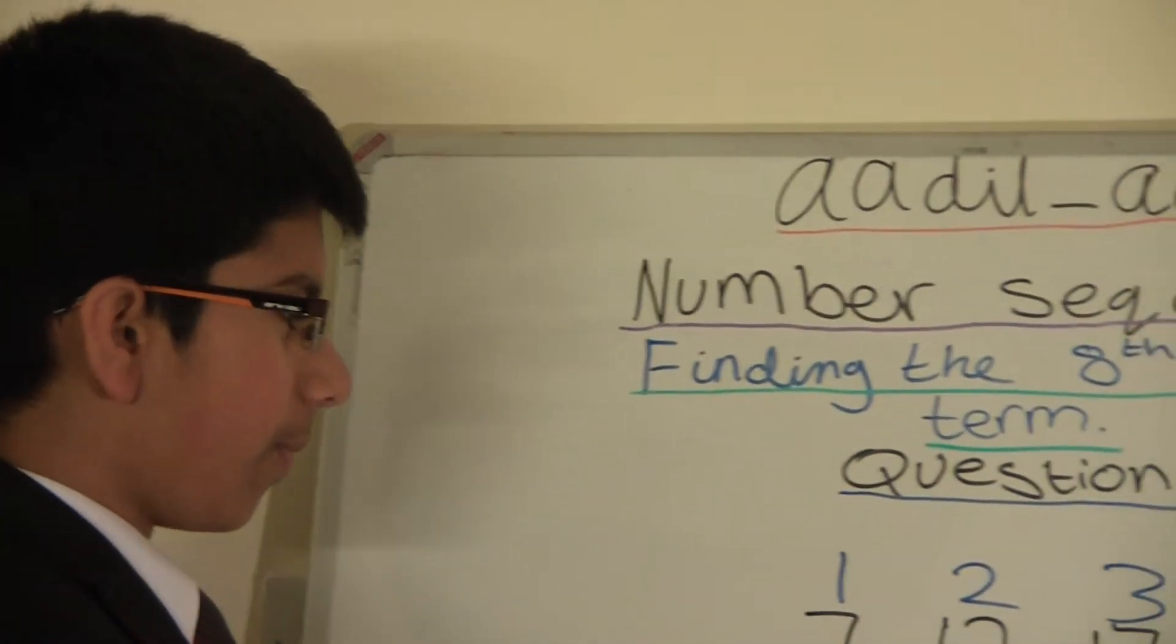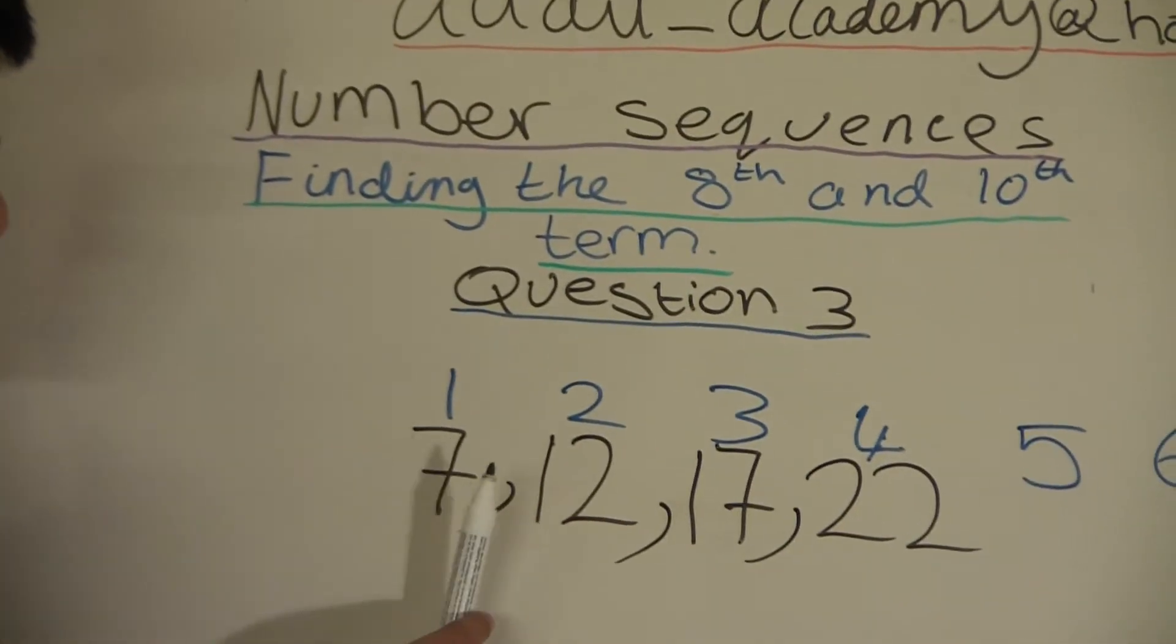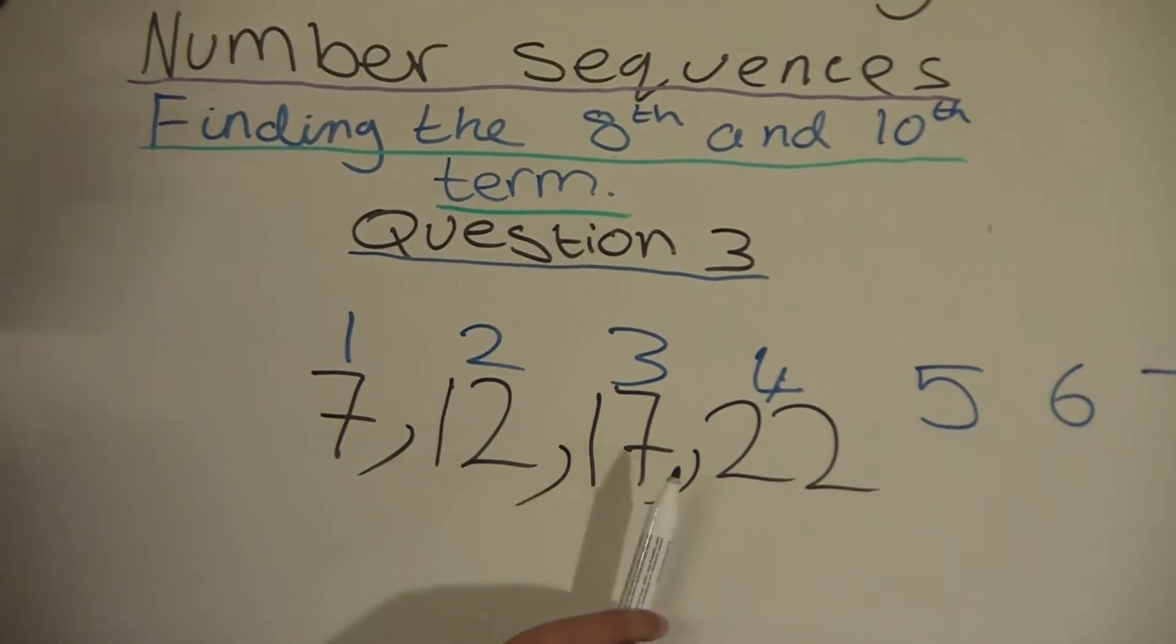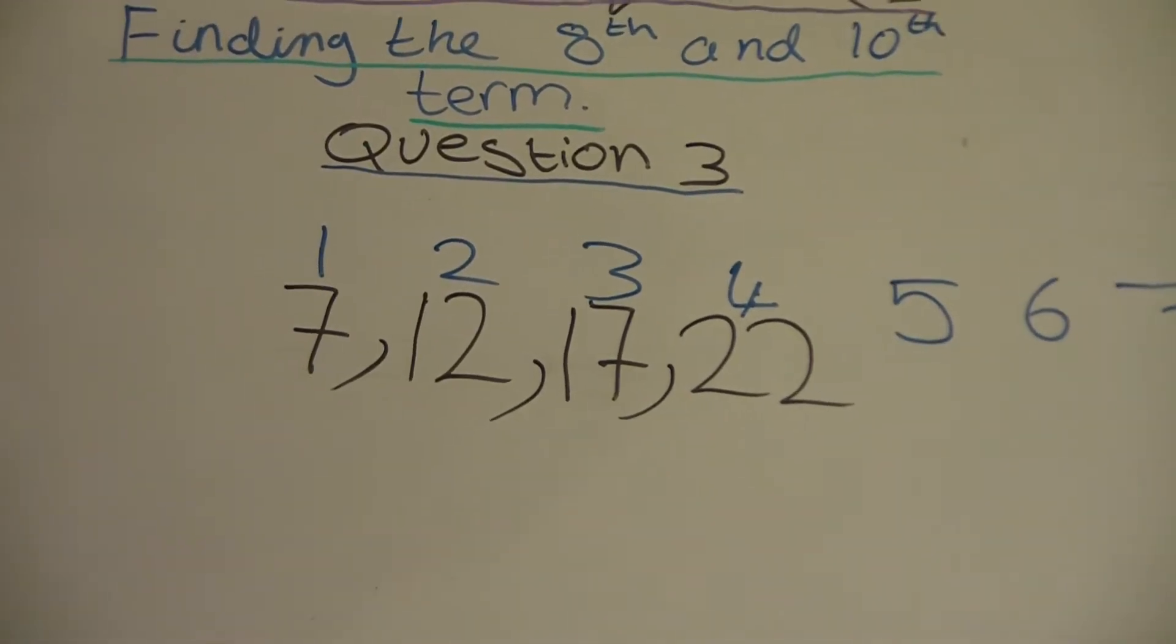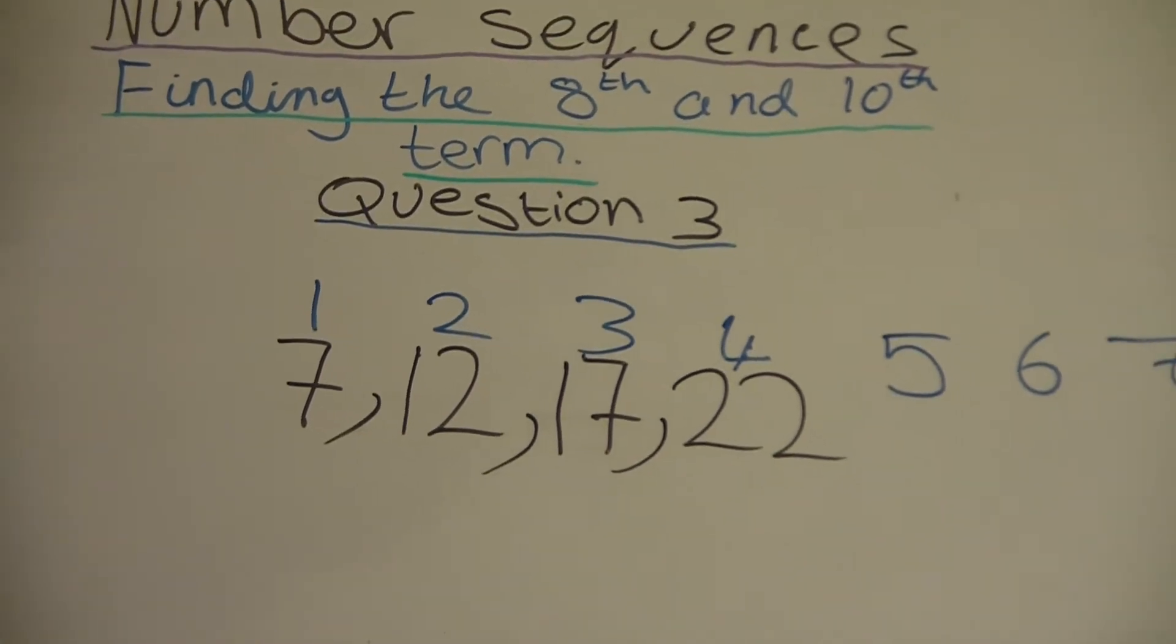Question number 3. So today our sequence is 7, 12, 17, and 22, and we have to find the 8th and the 10th term.